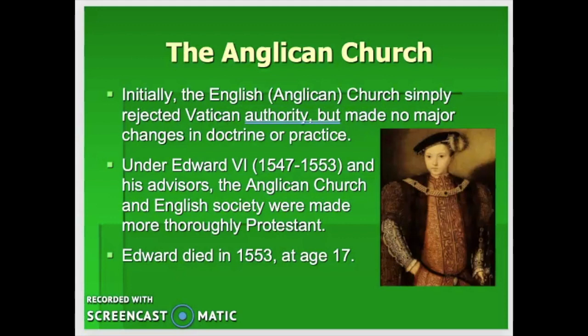When Henry died in 1547, his son Edward VI became king at only eight years old. He lasted until about age 17 and was never very well. His advisors were very strongly Protestant — of the John Calvin type — and really believed in Protestantism. They made life difficult for Catholics in England and made the English Church far more thoroughly Protestant.